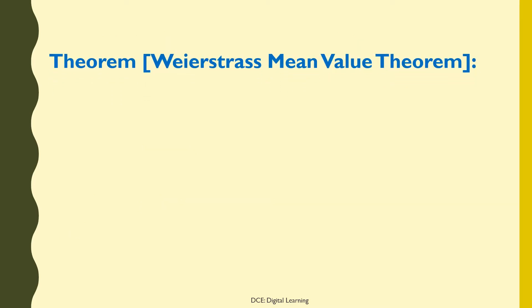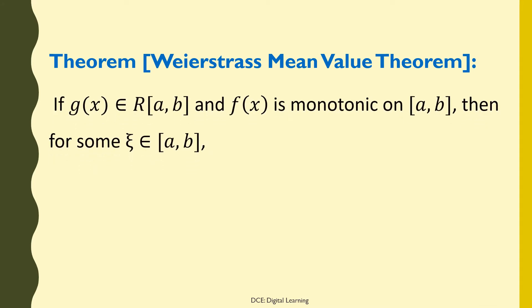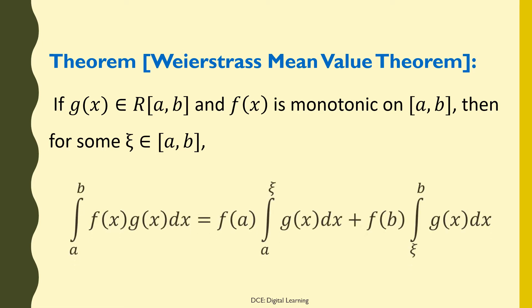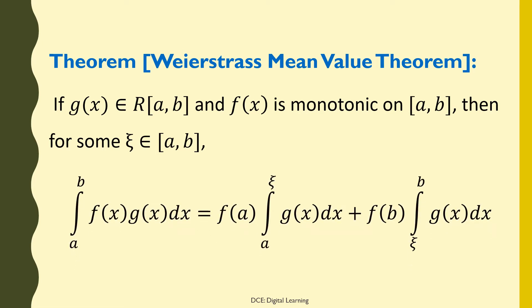Weierstrass mean value theorem: if g(x) belongs to Riemann integrable functions on [a, b] and f(x) is monotonic on [a, b], then for some η belonging to [a, b], the integral of f(x)g(x) dx from a to b equals f(a) times the integral of g(x) dx from a to η, plus f(b) times the integral of g(x) dx from η to b.